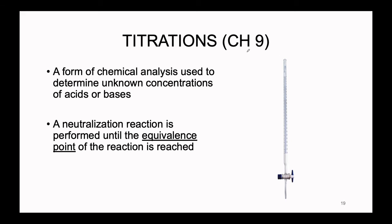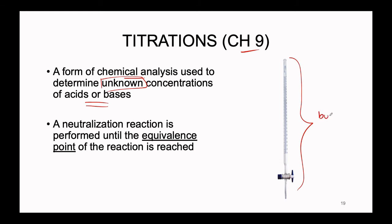Revisiting chapter 9: what is the definition of a titration? A titration is a form of chemical analysis, and its main purpose is to determine an unknown concentration — specifically of an acid or a base. In order to perform a titration, we use a fancy piece of glassware known as a burette.